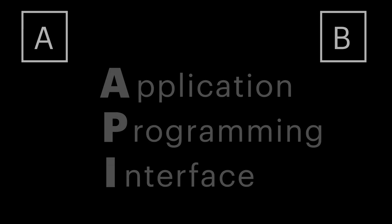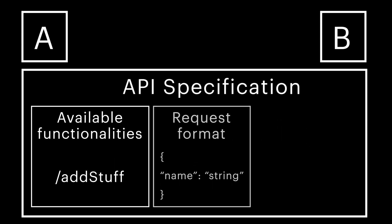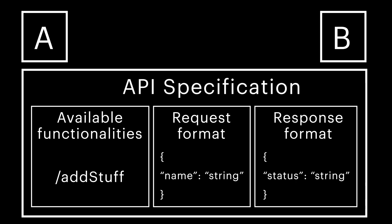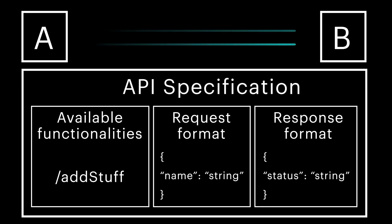For example, application A provides the definition of functionalities it can perform, as well as the format of requests it accepts and responses it sends. And application B uses those definitions to properly communicate with A.